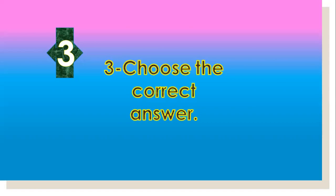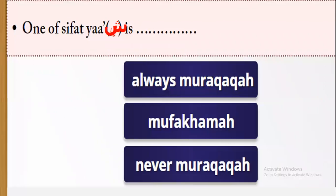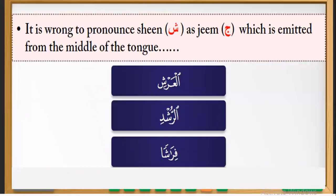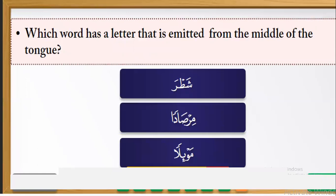Let's go to the third question: choose the correct answer. Sheen is emitted from where? The correct answer is the middle of the tongue. One of the sifat of Sheen is what? The correct answer is: Sheen is always muraqaqa. It is wrong to pronounce Sheen as Jim, which is emitted from the middle of the tongue. Choose the correct word — the correct answer is: shatara.